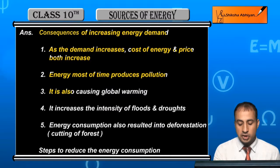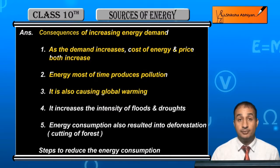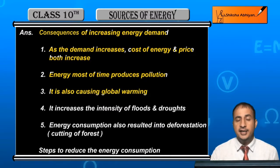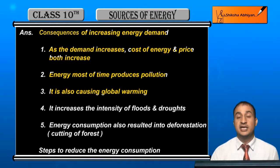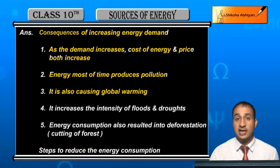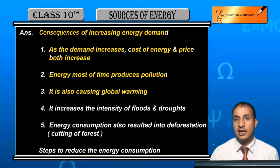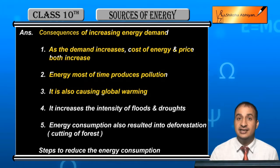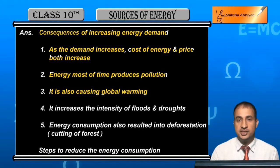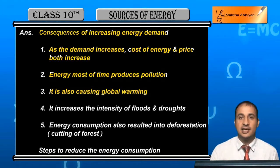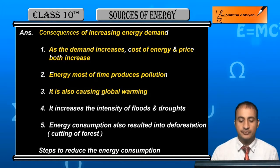It is also causing global warming. जब pollution होगा और energy से जो gases निकलती हैं — जैसे carbon dioxide और methane — ये global warming gases हैं. ये gases earth का temperature increase कर रही हैं, on an average. इसे हम global warming कहते हैं.